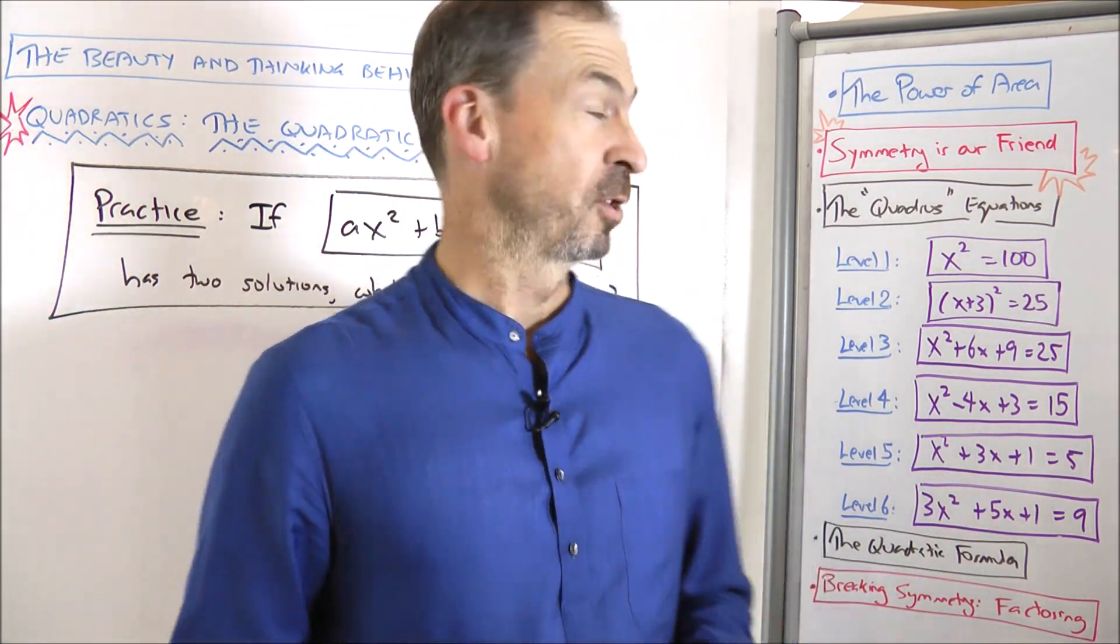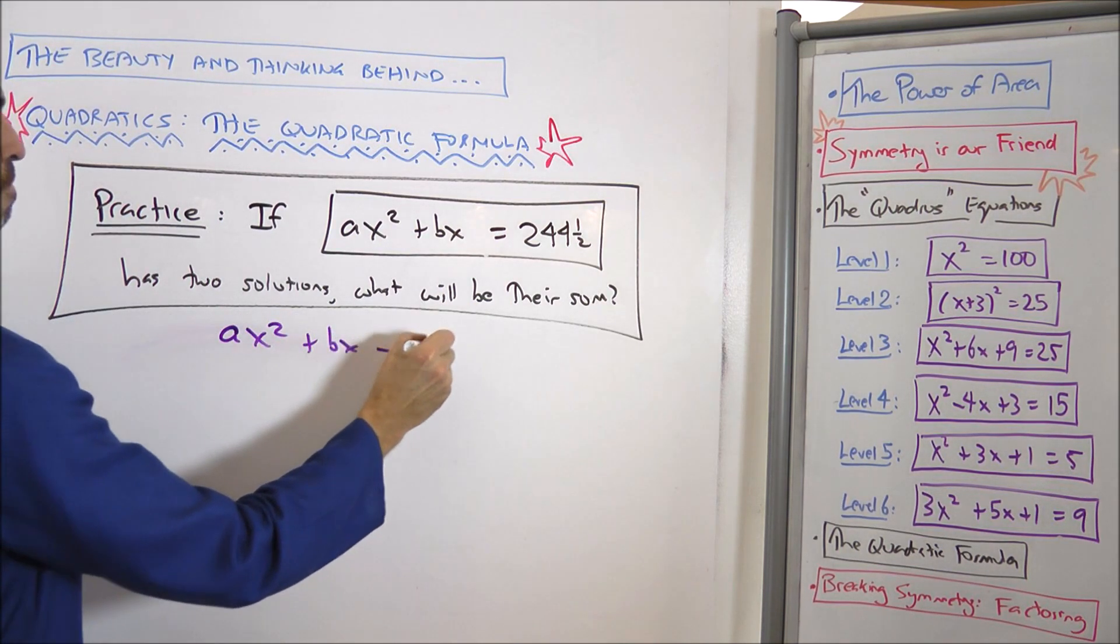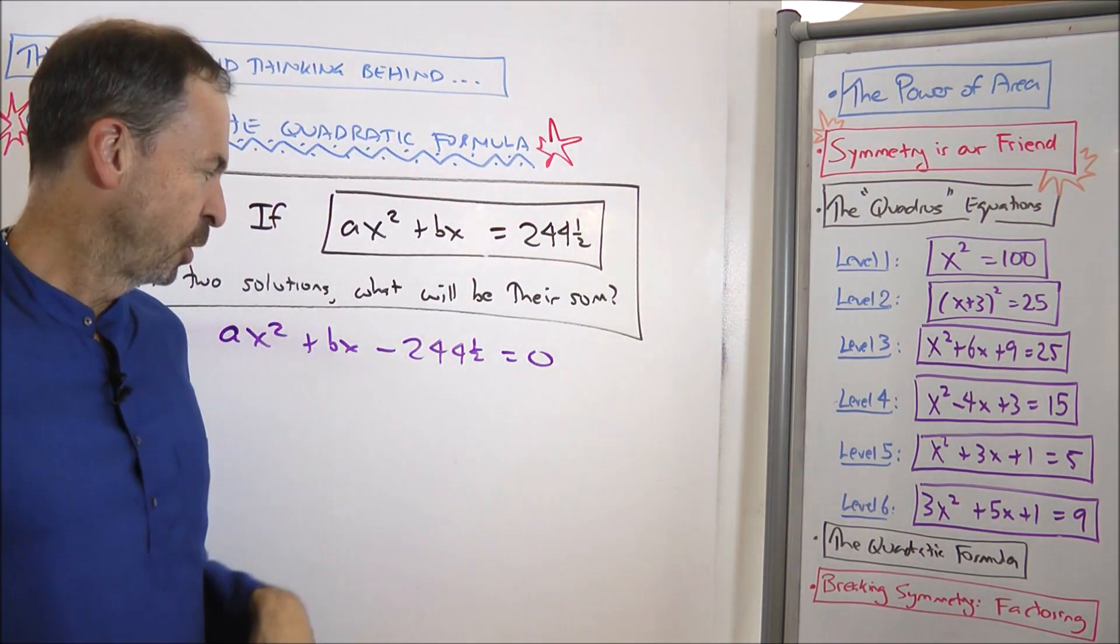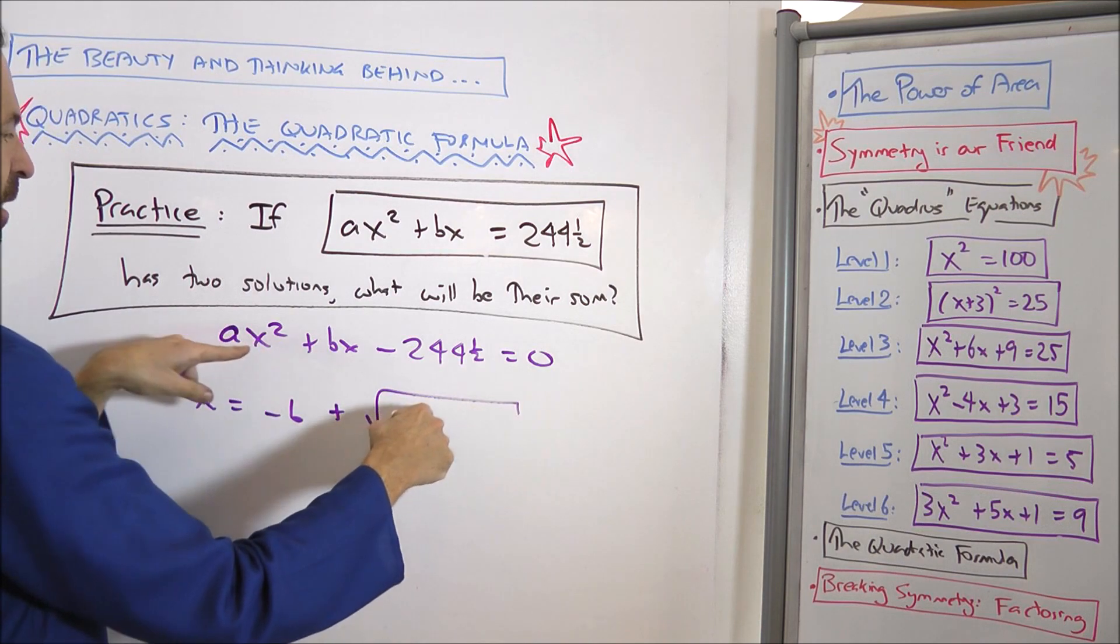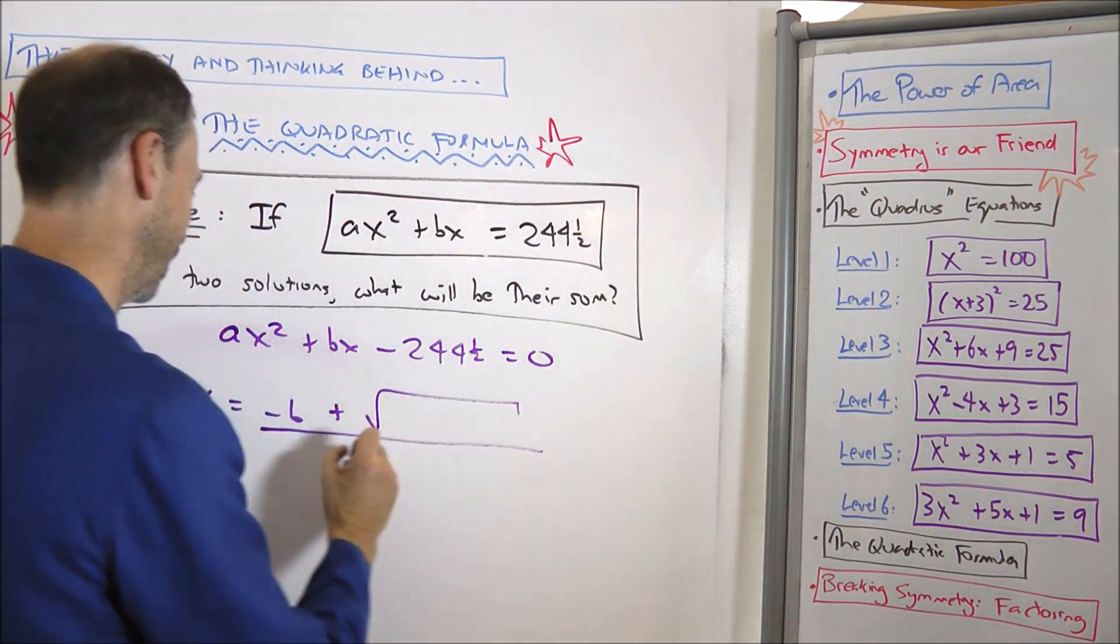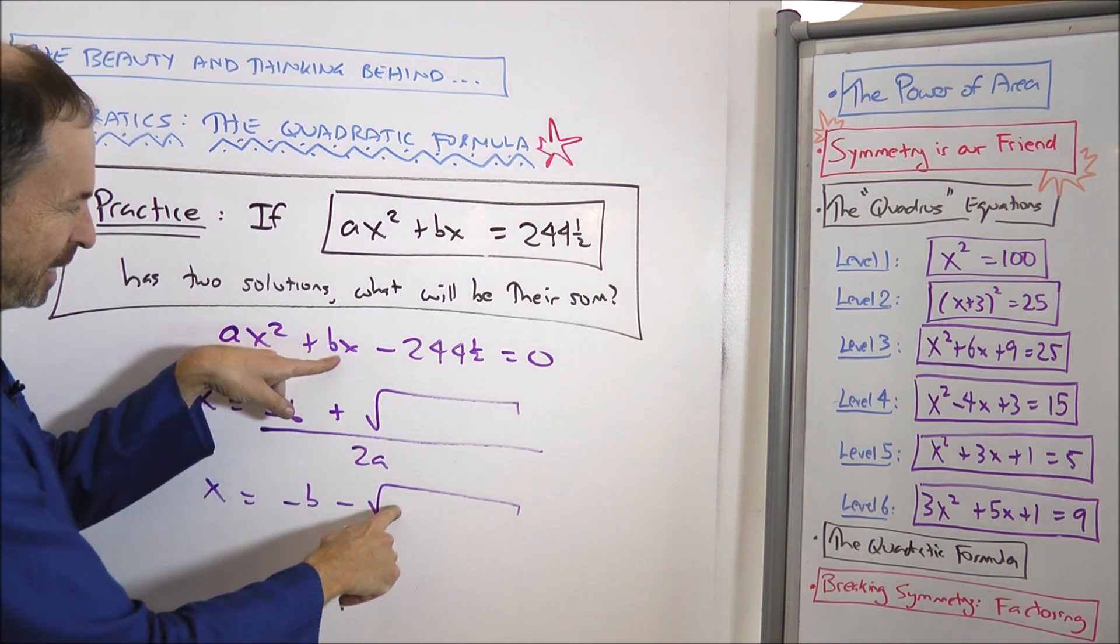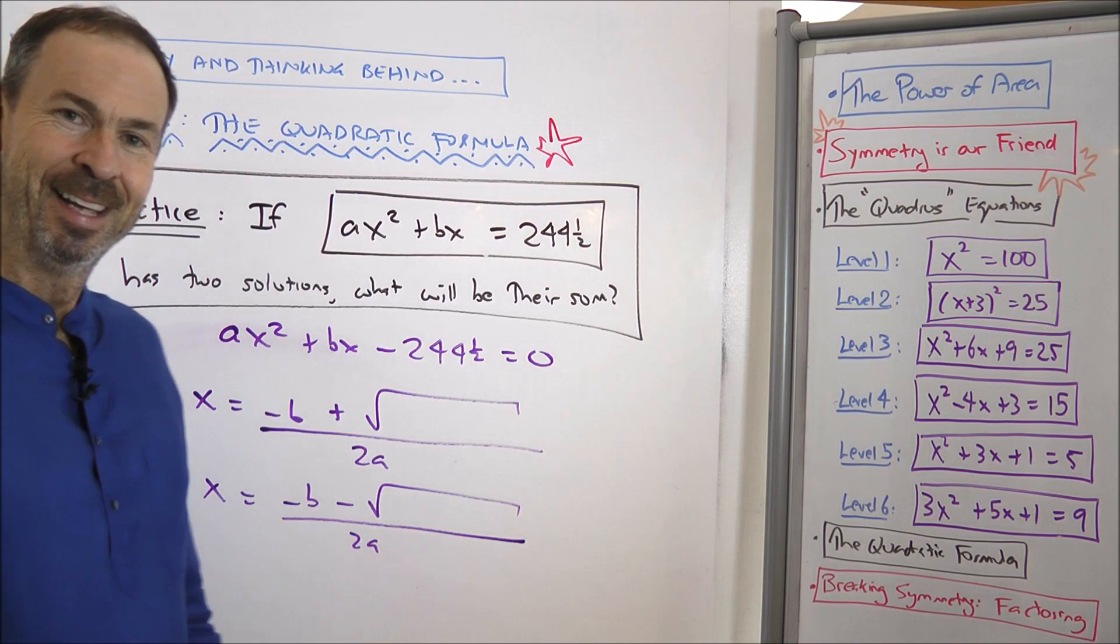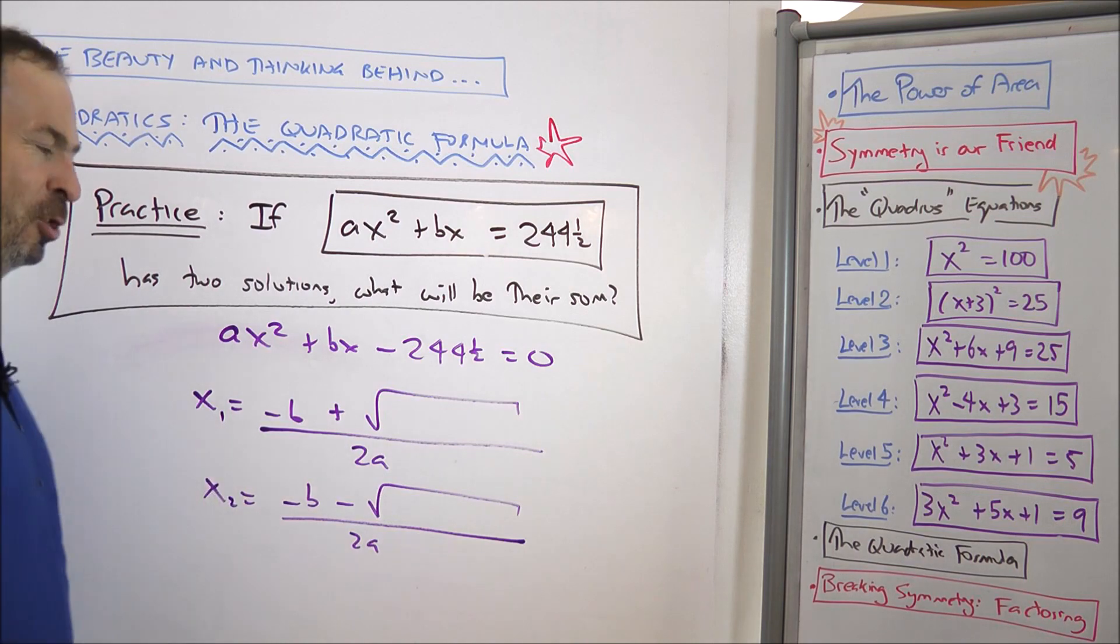Okay, so let me use the quadratic formula on this one just to practice the quadratic formula today. So, we've really got the quadratic equation ax squared plus bx minus 244 and a half equals zero. Remember, the quadratic formula wants an equation equals zero. In which case, the quadratic formula says one solution would be x equals negative b plus the square root of b squared minus 4 times a times that, all divided by twice a. And the other solution would be negative b minus the same square root, all divided by 2a. Now, the question was I want to add those two solutions. So, maybe we'll get them slightly different names. There's solution 1, x1. There's solution 2, x2.